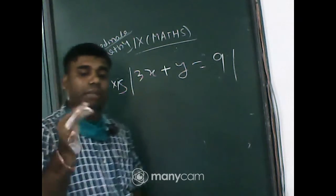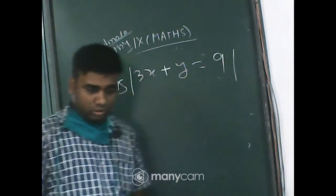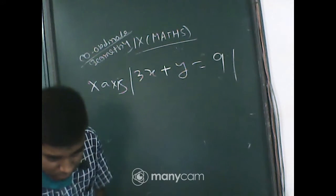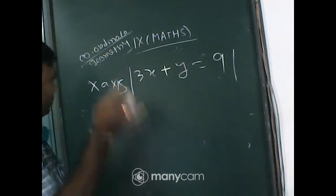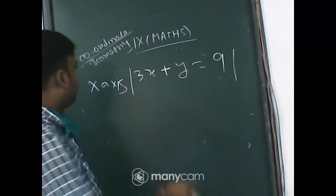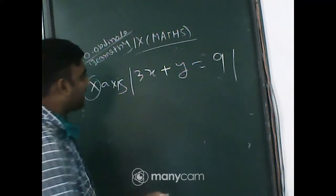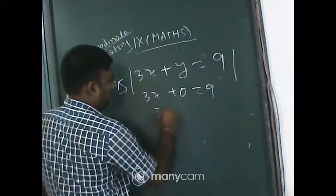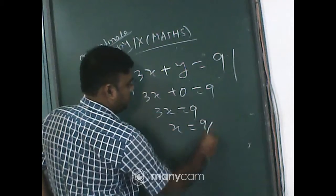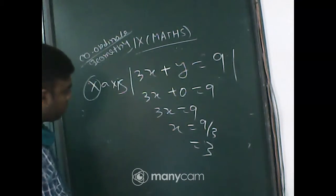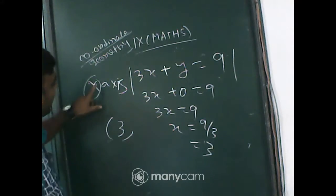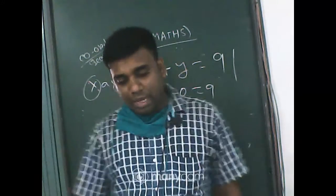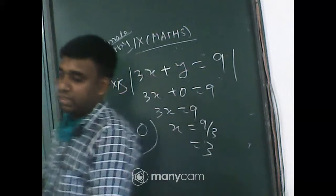Ditom answered (3, 0). As it is the x-axis — cutting the x-axis means you put y equals 0. So y equals 0 gives x equals 3. Cutting the x-axis means y should be 0 — the point is (3, 0). Got it everyone? Any problem? Concept is clear.